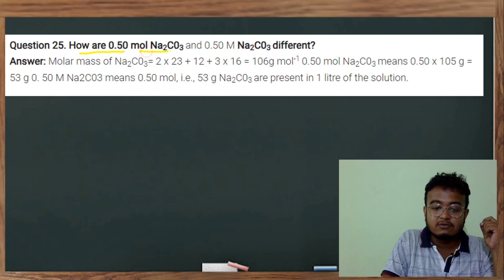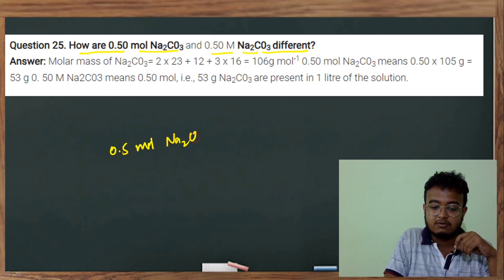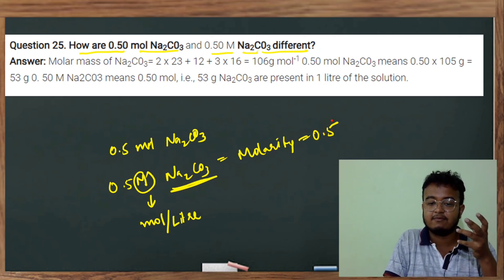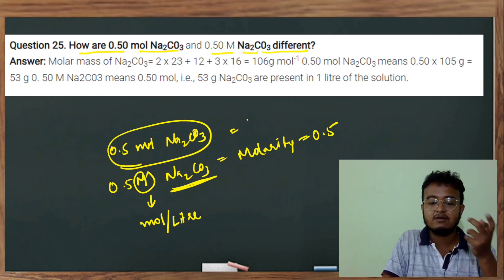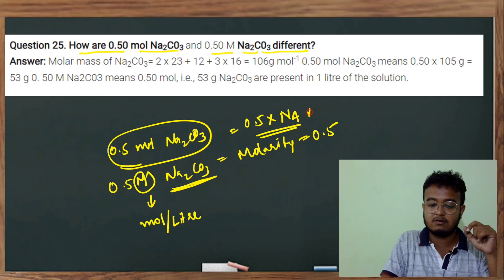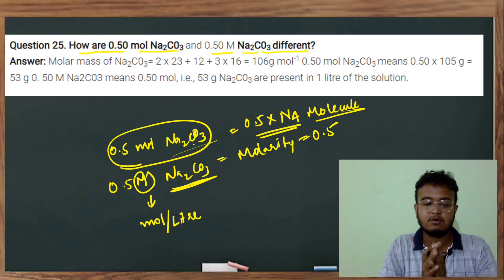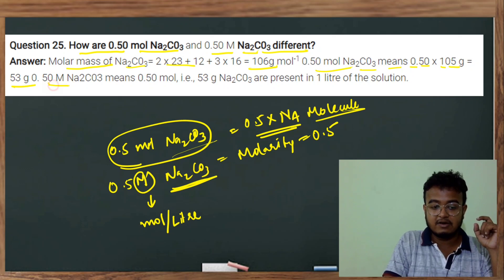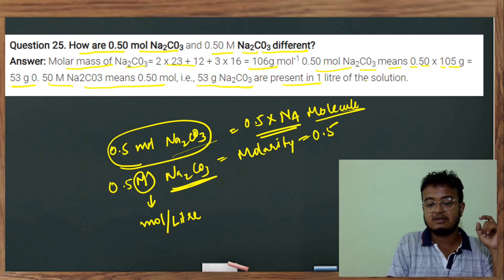How are 0.5 mol Na2CO3 and 0.5 M Na2CO3 different? Here, 1 mol of Na2CO3 means that the molar mass of Na2CO3 is 106. So 0.5 mol of Na2CO3 equals 53 grams. Whereas 0.5 M Na2CO3 means 1 gram of Na2CO3 is present in 1 litre of the solution.